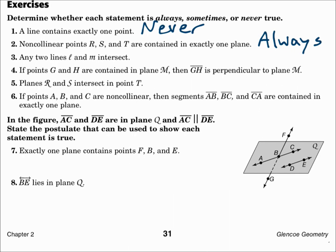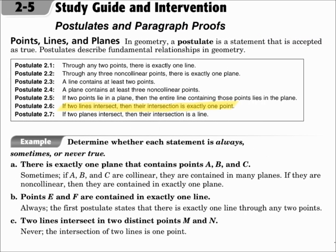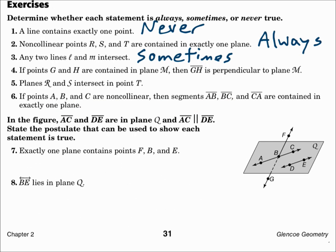Number three: any two lines, L and M, intersect. That postulate says if two lines intersect, then their intersection is exactly one point. So we know lines can intersect, but parallel lines do not intersect. So this would be sometimes — sometimes they intersect in exactly one point, and sometimes they don't intersect at all.